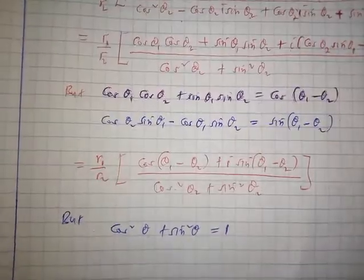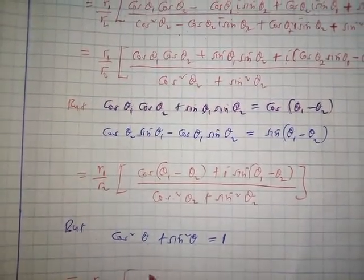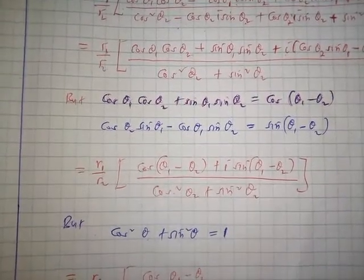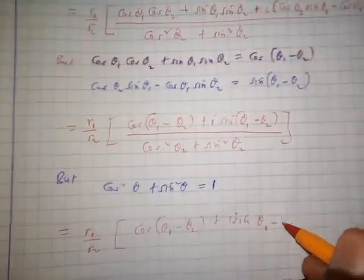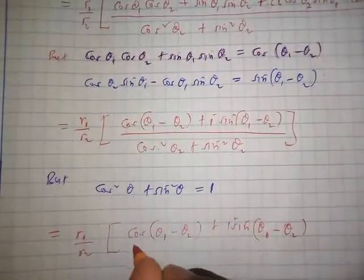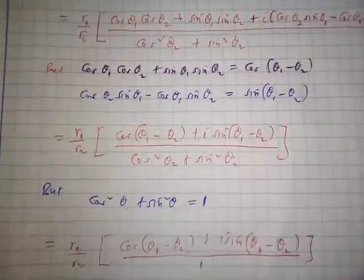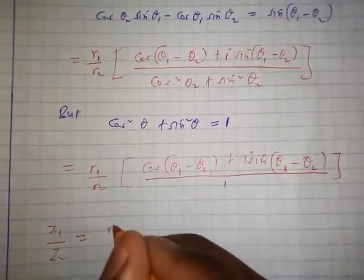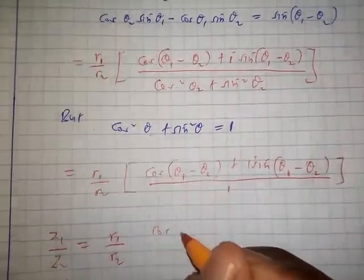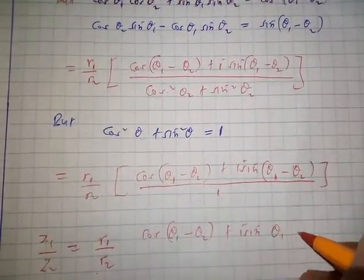Therefore we have r1 over r2 times (cos(theta1 minus theta2) plus i sin(theta1 minus theta2)) over 1. And therefore z1 over z2 equals r1 over r2 times (cos(theta1 minus theta2) plus i sin(theta1 minus theta2)). This completes the proof.